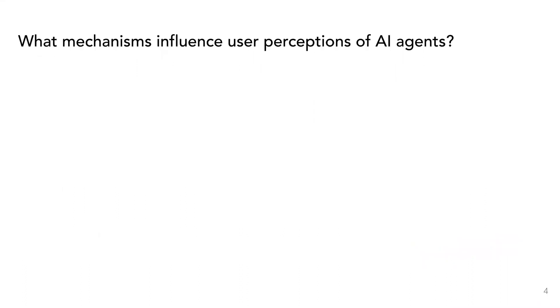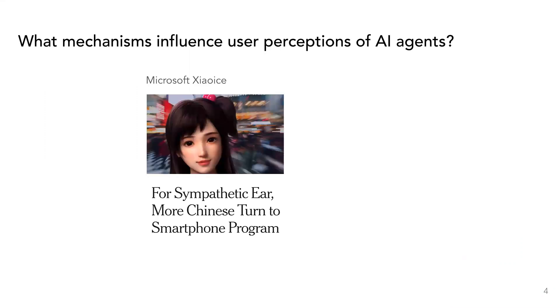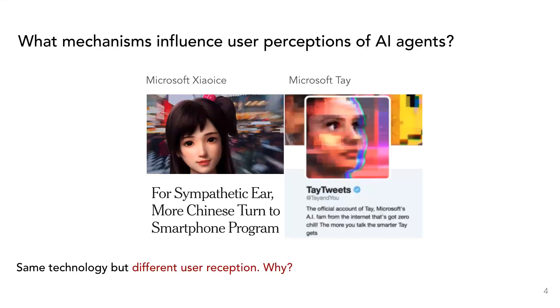As conversational agents have become pervasive, it is important to understand the mechanisms that influence users' experiences of these agents. What causes some AI agents to get adopted while others are discarded? Why would one system amass millions of monthly users while the same techniques powering Tay led to it being pulled down for eliciting antisocial interactions?